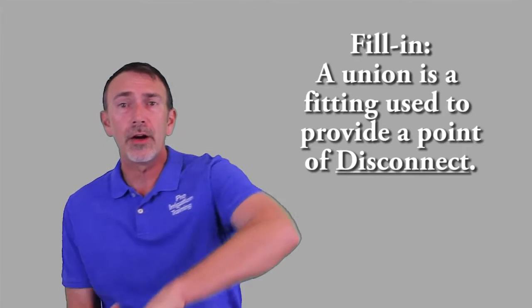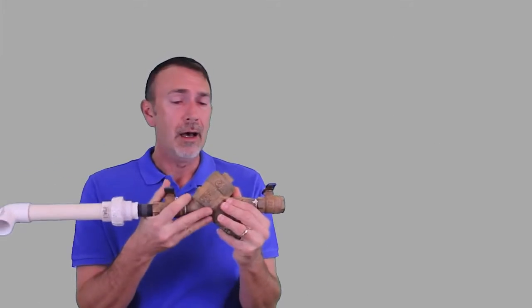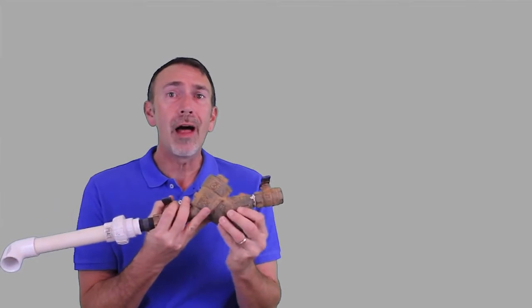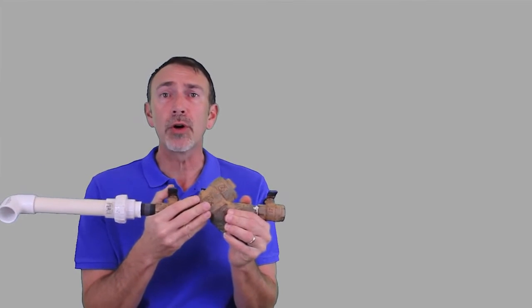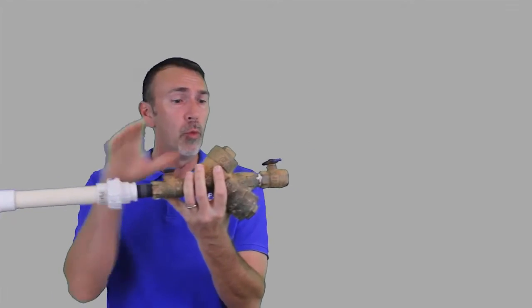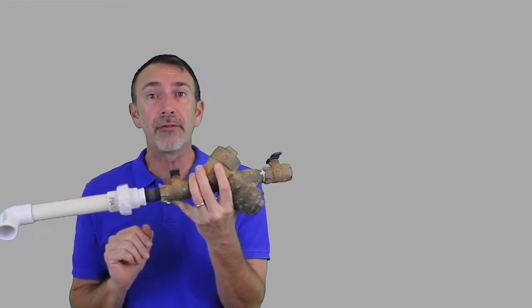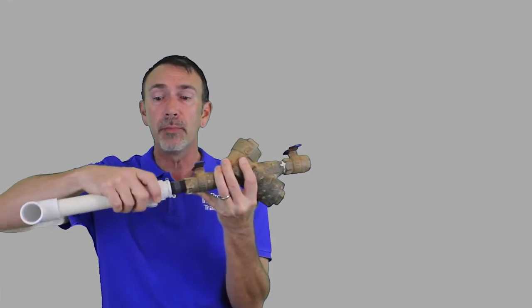What we've got here is a backflow preventer, it's brass. In moderate to cold climates, these things can freeze and burst during the winter. So what we like to do is put a union, one on each side of it, so that when it comes time to shut the system down for the winter, we can just take this apart.